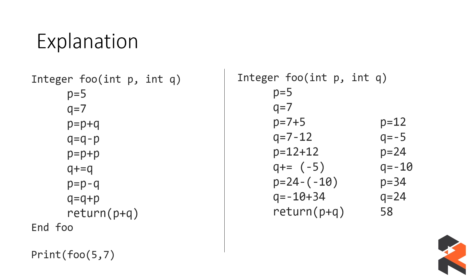Then p = p - q: p is 24 and q is -10. Subtracting a negative value adds it, so p = 24 - (-10) = 34. Next, q = q + p = -10 + 34 = 24. The final answer is returned as p + q = 34 + 24 = 58.